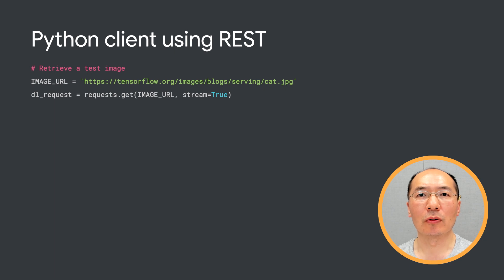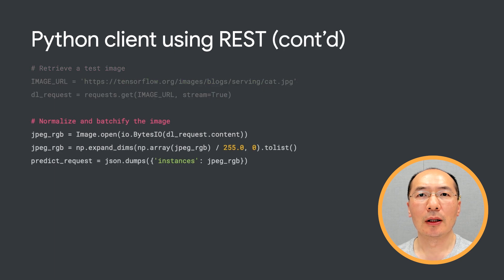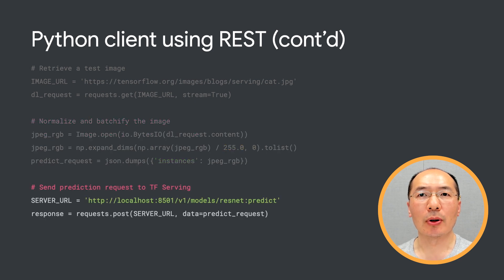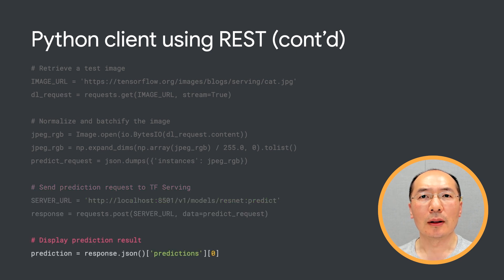Since this is an image classification model, we first download a test image file in our Python code. Then we normalize the image tensor and dump it into JSON. Now we can send a POST request to the TF Serving endpoint. Lastly, we can get the prediction from the response. That's it — it's pretty straightforward.